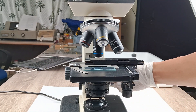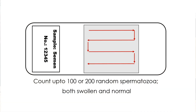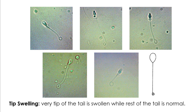Moving the slide from left to right and right to left, make a random count of at least 100 sperm cells, preferably up to 200 cells, recording both swollen and normal tails. The type of swollen spermatozoa to be assessed should look like any of the sperm cells shown in the photo collage.